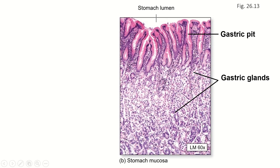Here's that microscope slide again — you can see the stomach lumen at the top, the gastric pits lined with the surface mucus cells and the neck mucus cells, and then the gastric glands where we see the parietal cells, the chief cells, and the enteroendocrine cells. Down here you can start to see some blood vessels absorbing the hormones from those enteroendocrine cells. In the next video, we're going to move on to the small intestine.